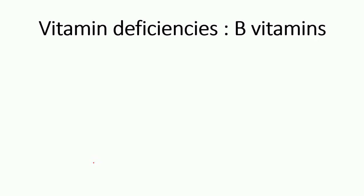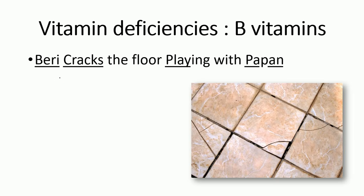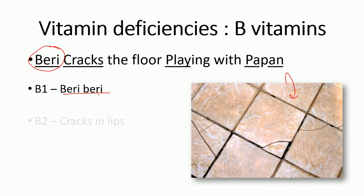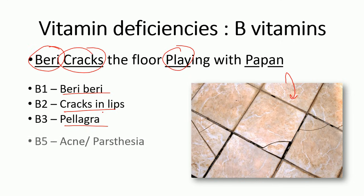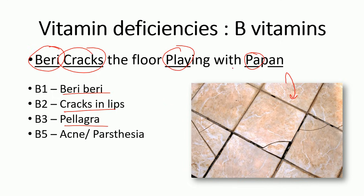Now for vitamin B deficiencies — this is a bit more difficult because there are many names. Use the sentence: 'Betty cracks the floor playing with Papa.' The underlined parts map to deficiency diseases. Vitamin B1 deficiency causes beriberi; vitamin B2 causes cracks in the lips, mouth, and tongue; vitamin B3 causes pellagra ('play' → pellagra); vitamin B5 causes paresthesia and acne ('Pa' → paresthesia).